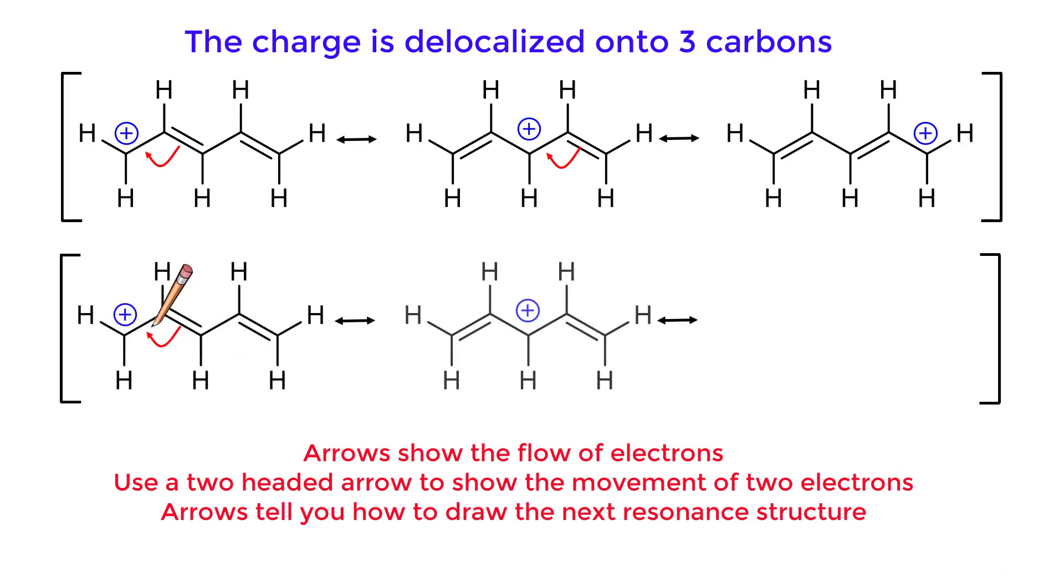Arrows show the flow of electrons. Use the two-headed arrow to show the movement of two electrons. Arrows tell you how to draw the next resonance structure.